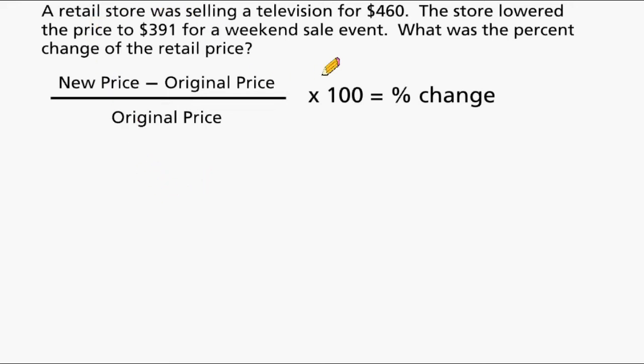This problem reads that a retail store was selling a television for $460. The store lowered the price to $391 for a weekend sale event. What was the percent change of the retail price? So let's start with what the new price is. The new price is $391 and the original price was $460. So we can see that the price actually dropped. And we have to divide this by the original price which was $460, and then we have to multiply by 100 to figure out what our percent change is.